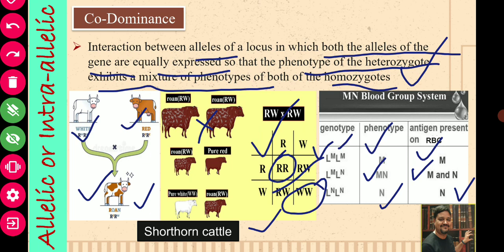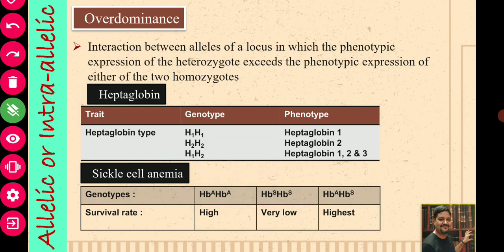The next one is over-dominance. What is over-dominance? The term 'over' means above, so above the dominance. It is an interaction between alleles of a locus in which the phenotypic expression of the heterozygote exceeds both the homozygotes — it will exceed the phenotypic expression of either of the two homozygotes or both the homozygotes. An example is haptoglobin.